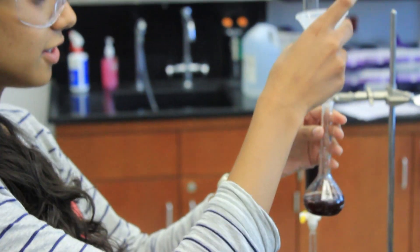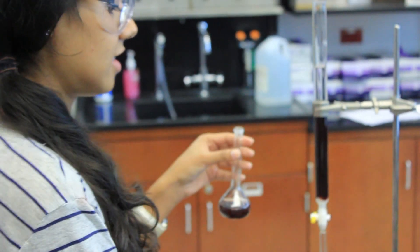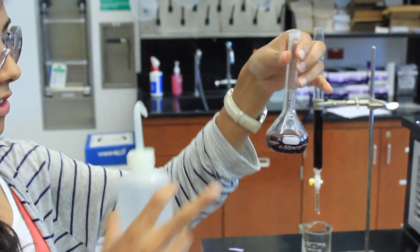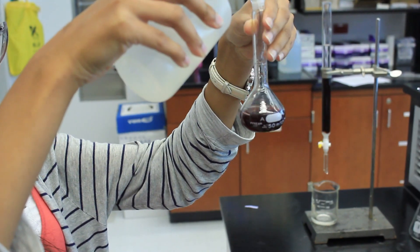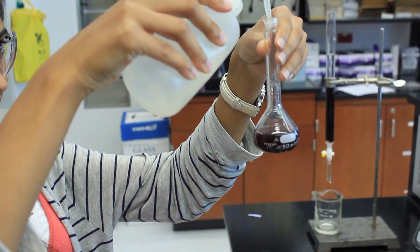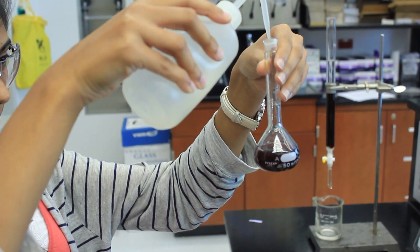Then you're going to take your funnel out and dilute it up to the 50 milliliter mark right there. So just take your squirting bottle and keep pouring it until it gets all the way up there.